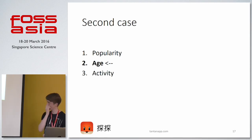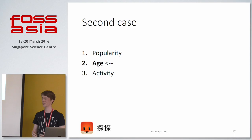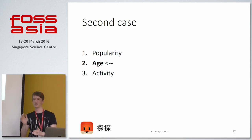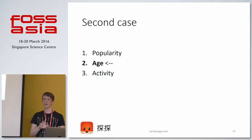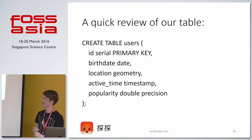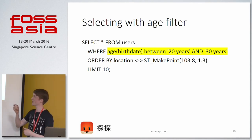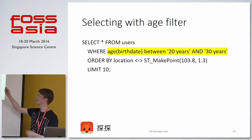Moving on, the second case is age. In a dating application the age of the people you look at is very important — most people have some age requirements for potential partners. But in contrast to popularity, this is a strict filtering criterion. We don't use age to show younger or older people earlier; we're just interested in whether you are within an age range or not. Looking at our table, we have a birth_date as a date column, which we can use for this query.